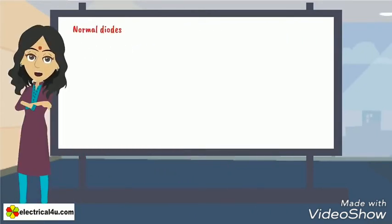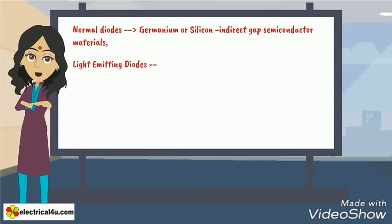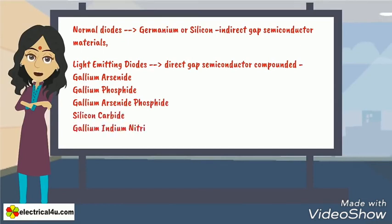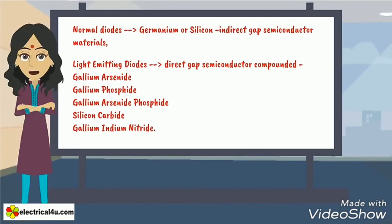Unlike normal diodes, which are made from either germanium or silicon, the indirect gap semiconductor materials, light emitting diodes are made from direct gap semiconductor, compounded such as gallium arsenide, gallium phosphide, gallium arsenide phosphide, silicon carbide, gallium indium nitride. Also, they may be mixed together at different ratios to produce more distinct wavelengths of colors. This is how an LED or light emitting diode works.